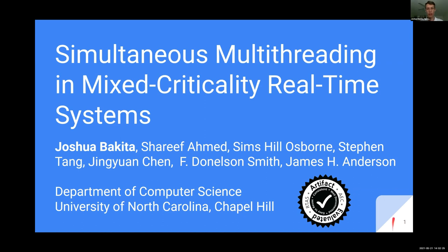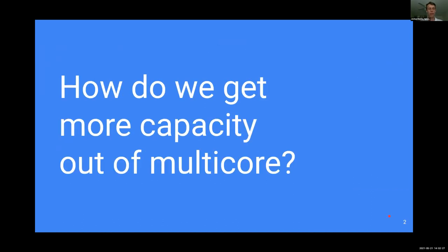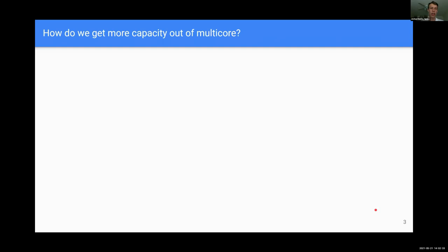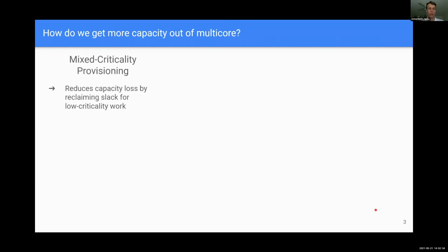This work is motivated by the question of how do we get more capacity out of multi-core? One existing technique that helps with that question is mixed criticality provisioning, which helps reduce capacity loss by reclaiming slack from high criticality tasks for low criticality ones.